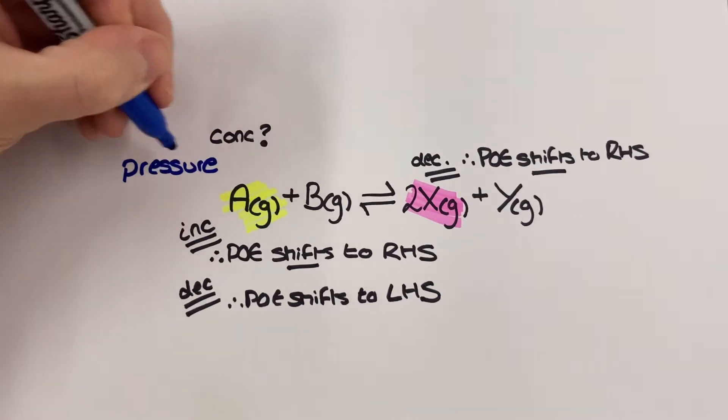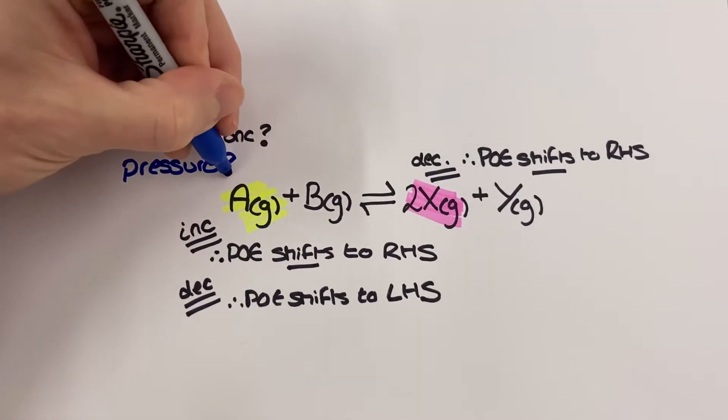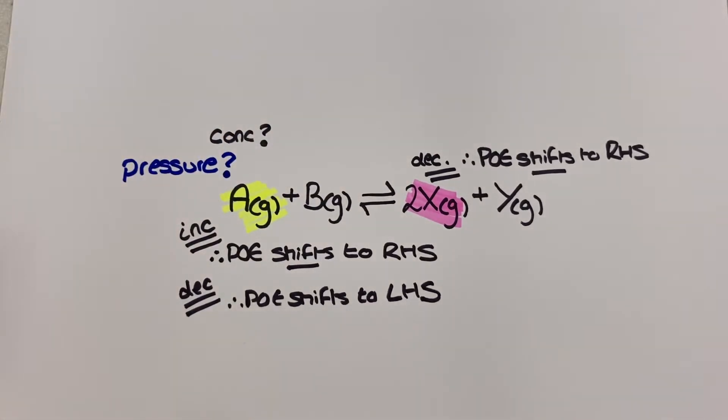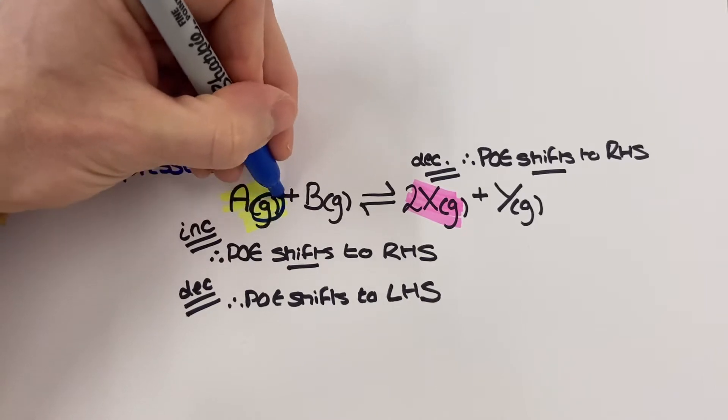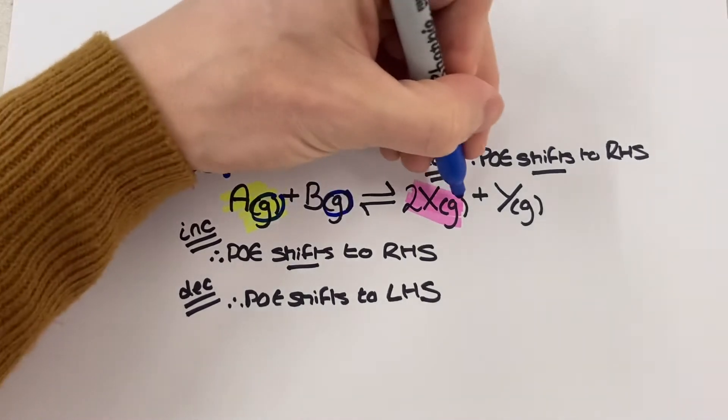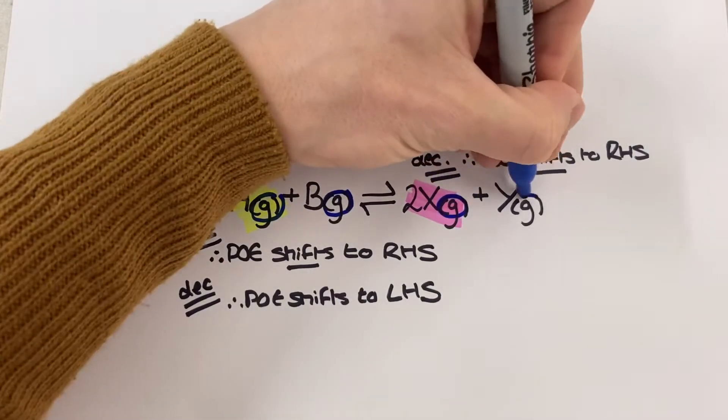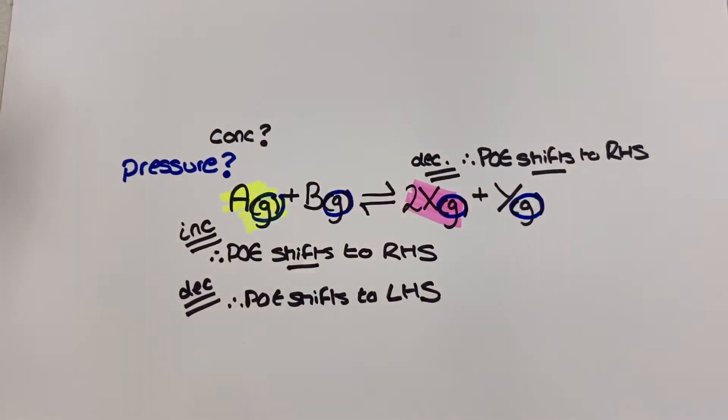All right then now moving on to changes in pressure. For pressure we first need to check that we have an entirely gaseous homogeneous equilibrium and that we have a different number of moles on either side of the reaction equation otherwise the equilibrium won't respond to changes in pressure.